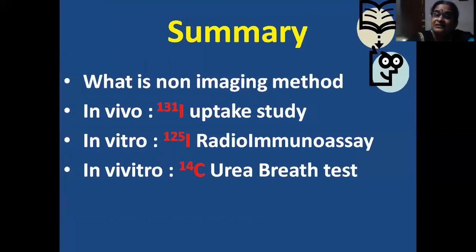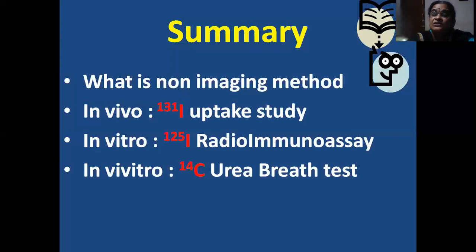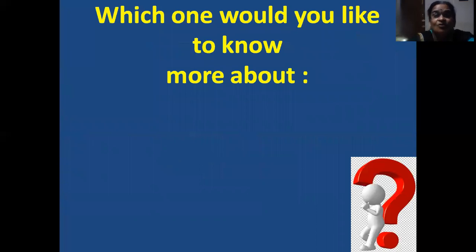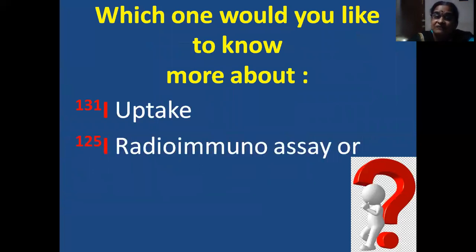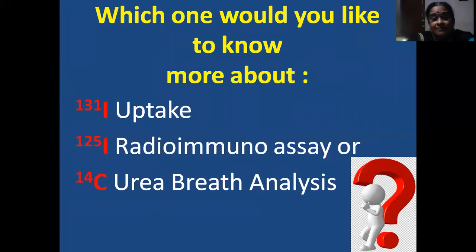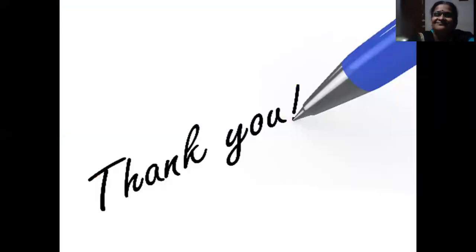In summary, non-imaging nuclear medicine methods include: the in vivo method with I-131 thyroid uptake study, the in vitro method with I-125 radioimmunoassay, and the in vivitro method with the C-14 urea breath test. I'll be leaving you with the option of which topic you'd like to know more about — whether it's the I-131 uptake study, the I-125 radioimmunoassay, or the C-14 urea breath analysis. Thank you.